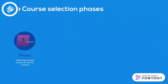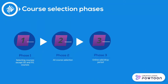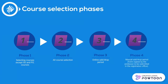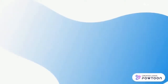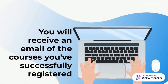Here are the course selection phases. Phase 1 is for selecting courses except GE and PE courses. Phase 2 is for all course selection. Phase 3 is the online add or drop period. Phase 4 is the manual add or drop period — a form signed by the professor needs to be submitted in the registration office. After all of that, you will receive an email of the courses you've successfully registered.